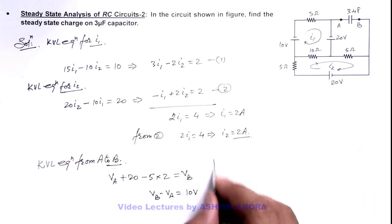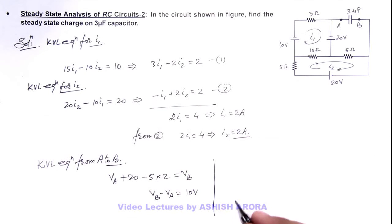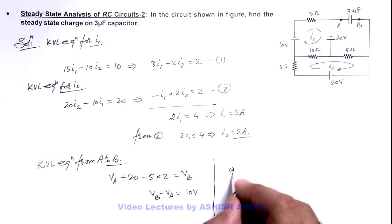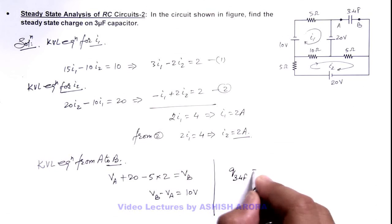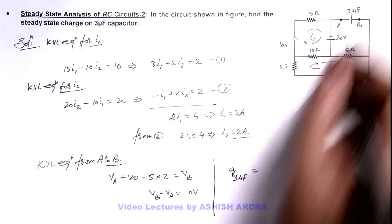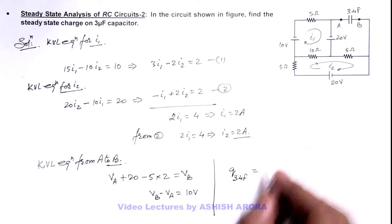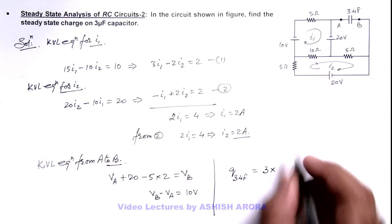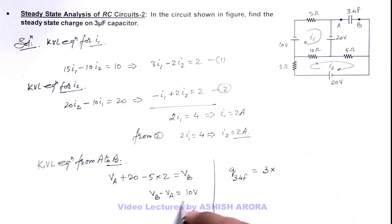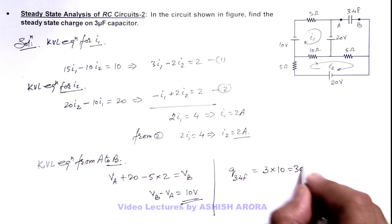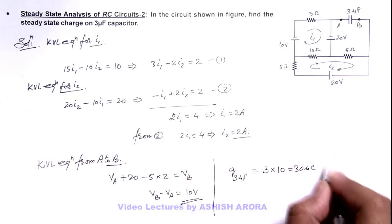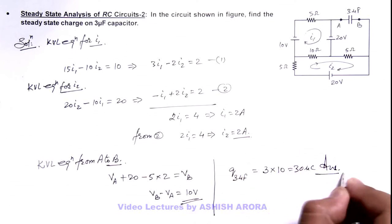Since we have the potential difference across the capacitor, we can find the steady state charge on the 3 microfarad capacitor as Q = CV. The capacitance is 3 microfarad and the potential difference is 10 volts, so the charge is 30 microcoulombs. That is the result of this problem.